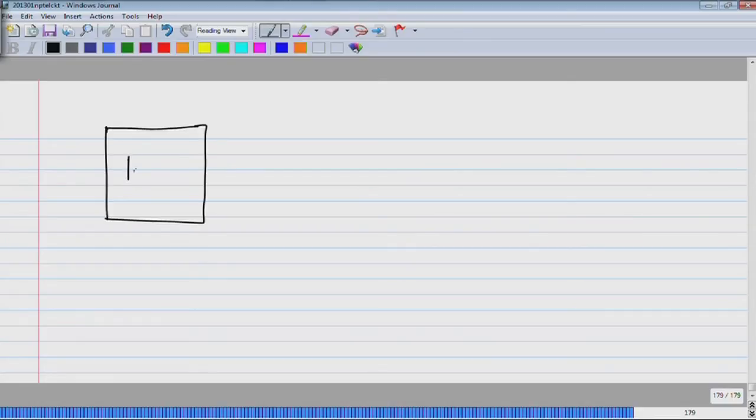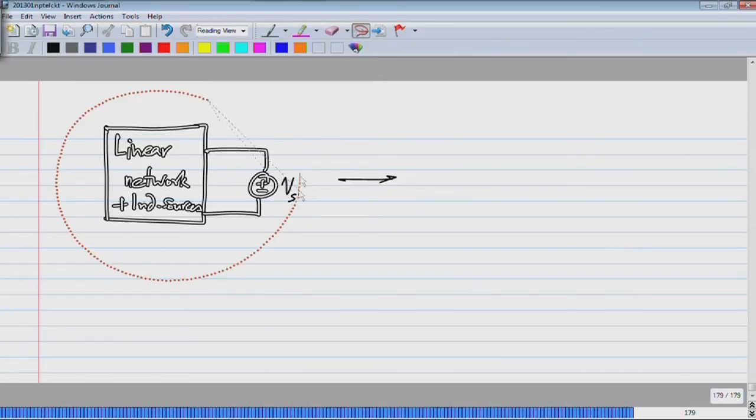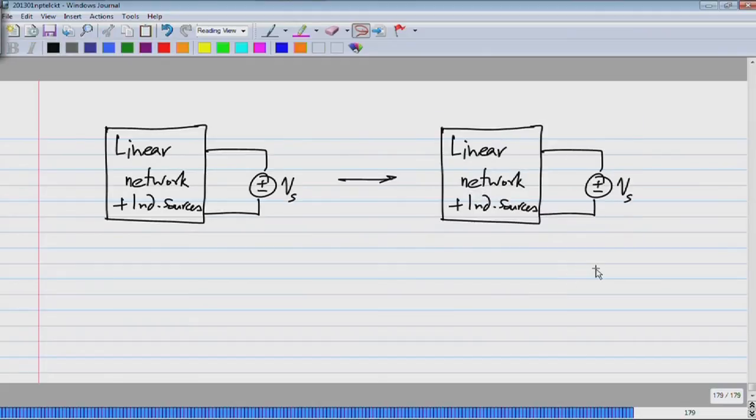Let's say we have a linear network with independent sources, and let me take a particular voltage source Vs. Then let's say I change only this voltage source value to Vs plus delta Vs. In general, all the branch voltages and currents inside this will change. Is there an easy way of computing only the changes without redoing the circuit analysis? Is there a way of calculating only the change due to the change in the voltage source?